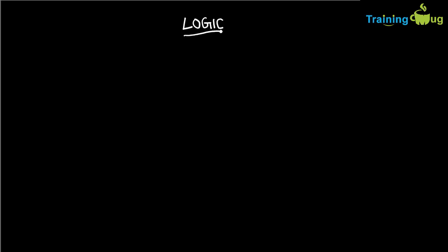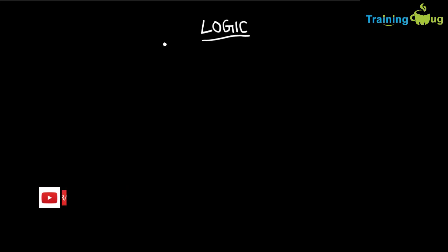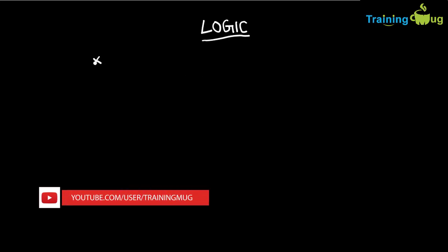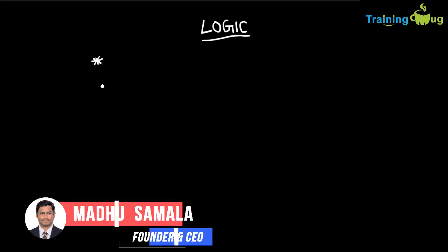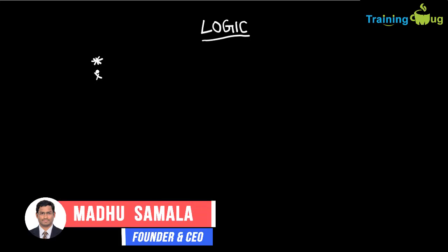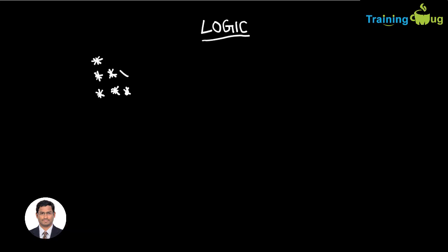Let us understand the logic for this program. How do you print stars using some patterns? They may ask you different patterns for printing stars or numbers. In our program we need to print a star character — for example, printing two stars here, then three stars, and in four lines printing four stars.